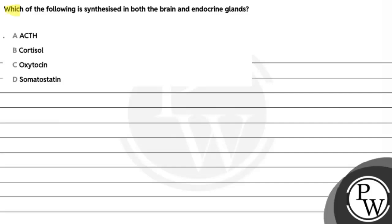Hello, let's read this question. The question says which of the following is synthesized in both the brain and endocrine gland. I am going to tell you what is synthesized in the brain and endocrine gland. The options are: